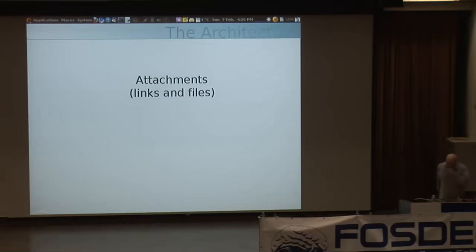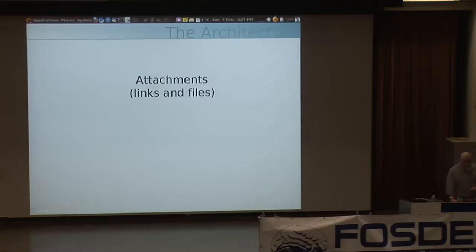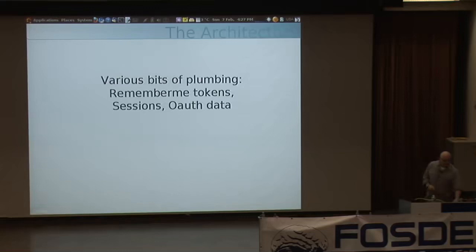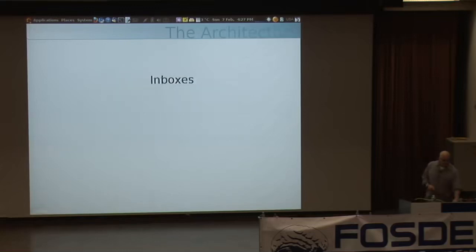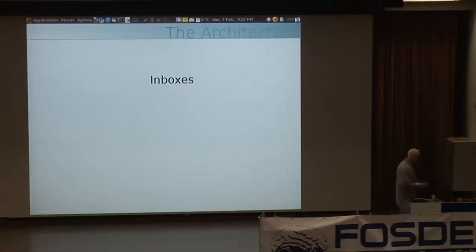Attachments have their own little subsystem in our architecture. We keep a record within the system, but we also keep the files out on the file system. Various bits of plumbing related to serving web pages include things like setting remember-me tokens, web sessions, and OAuth data. Another thing — and this is where I start talking about some design issues for those of you who've been wondering — we have inboxes in our system.